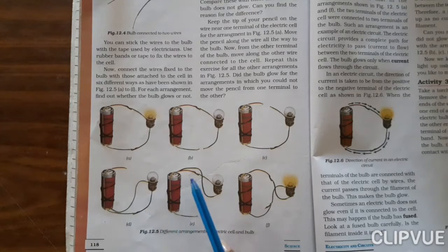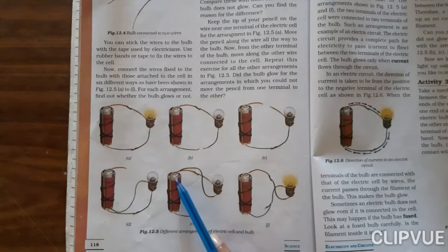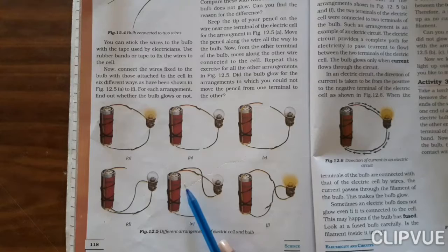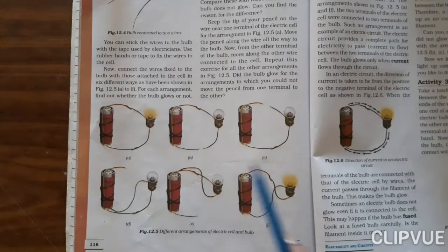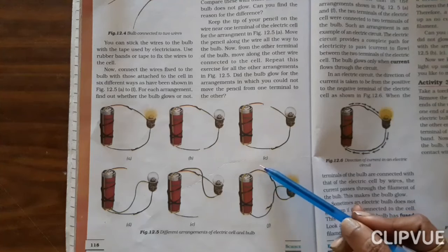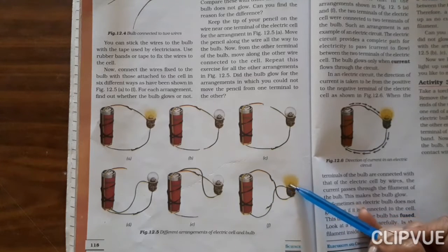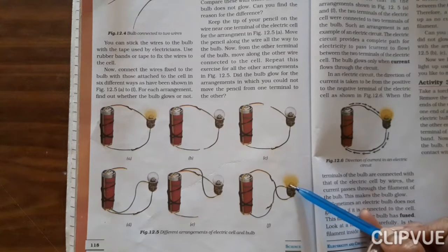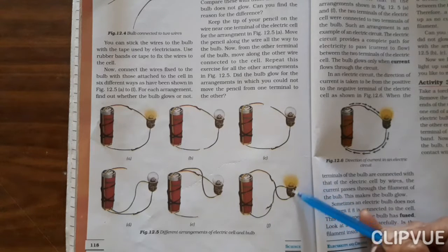Same way, over here both the wires are connected to the positive terminal of the cell. Again, the circuit is incorrect. But over here, this is connected to the positive terminal whereas this one is connected to the negative terminal, so again the circuit is complete and the bulb is glowing.